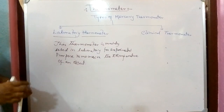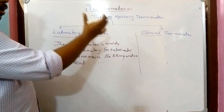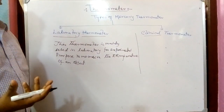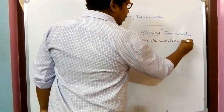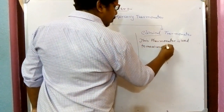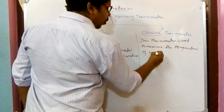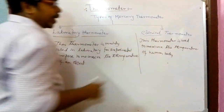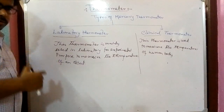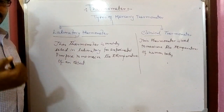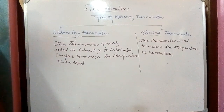For the clinical thermometer, by the name it is clear that 'clinical' means it is used by doctors. Most of you — in fact everyone — has seen this thermometer. It is used to measure the temperature of the human body. Again, both thermometers are mercury thermometers but their uses are different: the laboratory thermometer is for finding temperature of objects in the lab, and the clinical thermometer is used by doctors to measure the temperature of the human body.